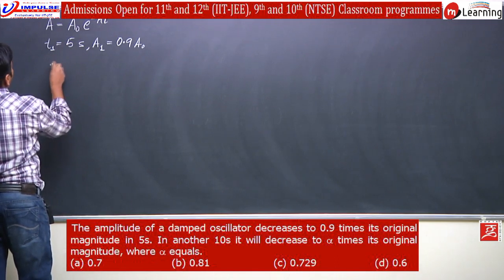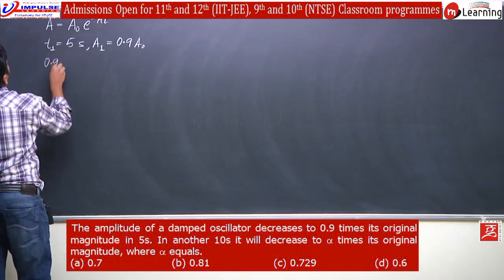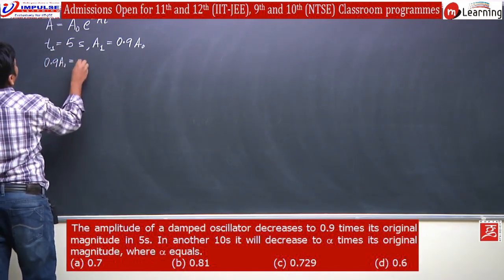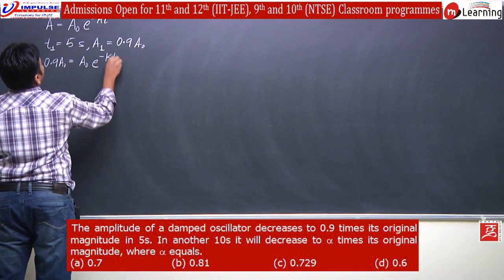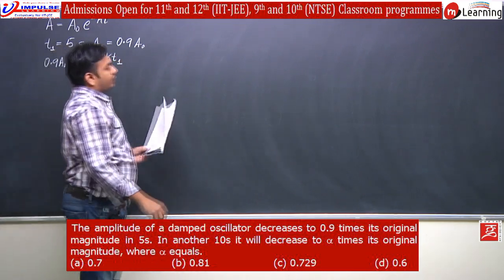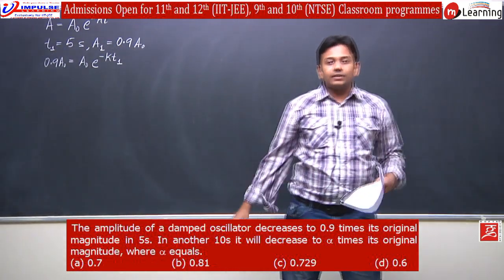Let's put all the values in the equation. 0.9 A0 is equal to A0 e to the power minus kt1, where t1 is 5 seconds.